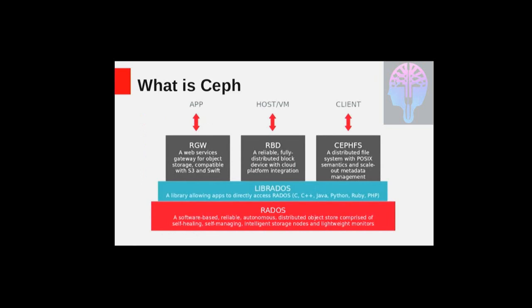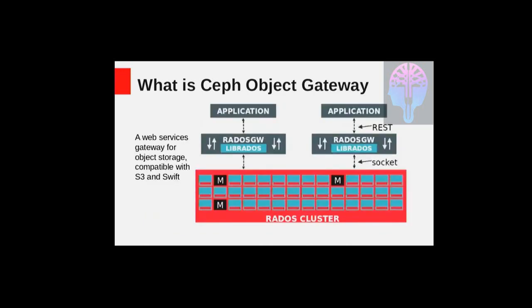What is CEPH? CEPH is an open source, highly scalable object storage which provides unified interfaces for block, file, and object storage. What is CEPH Object Gateway? CEPH Object Gateway is also known as Rados Gateway or RGW, and it provides an HTTP RESTful interface for accessing the object storage cluster. It also provides interfaces compatible with a large subset of AWS S3 and Swift APIs.